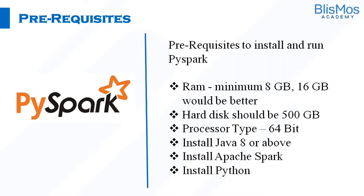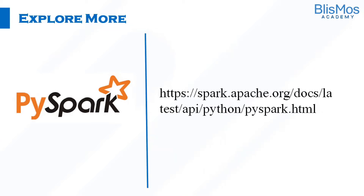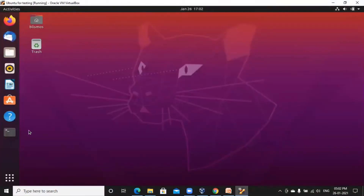As part of this video, I'll be showing you how to download Java, Spark, and Python. If you are still looking for more details, you can visit the Apache website — the link has been provided here. Let's begin with the download process. I will be downloading PySpark in Ubuntu.